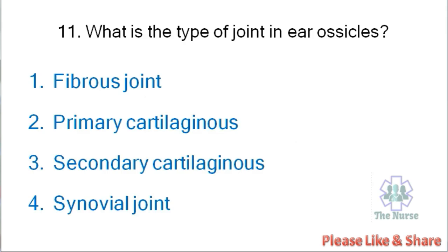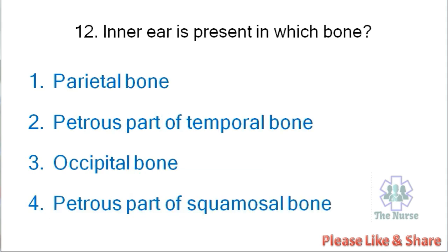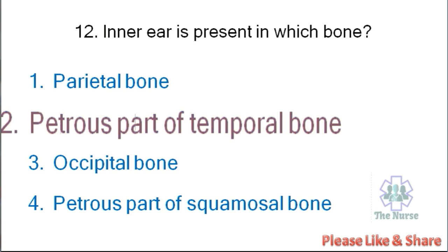Next question: What is the type of joint in ear ossicles? Options: fibrous joint, primary cartilaginous, secondary cartilaginous, synovial joint. Correct answer is synovial joint. Next question: Inner ear is present in which bone? Options: parietal bone, petrous part of temporal bone, occipital bone, petrous part of squamosal bone. Correct answer is petrous part of temporal bone.